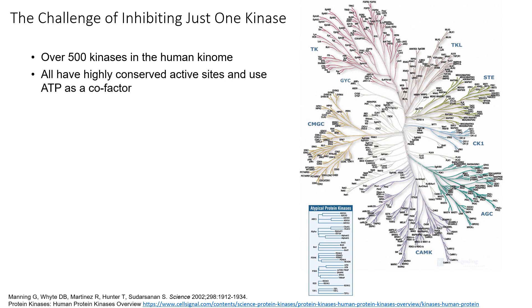All of these kinases use ATP. Since ATP is found in all living cells and is highly conserved, all kinases must have similar sites where they accept ATP. I'm just showing the human kinome here, but the ATP binding site structure is highly conserved across all of these kinases.